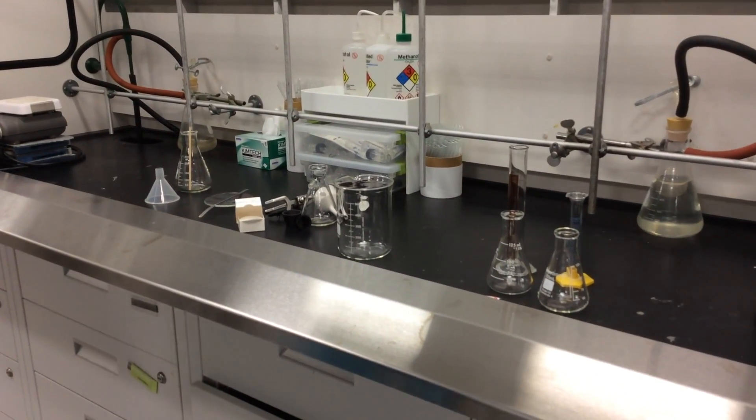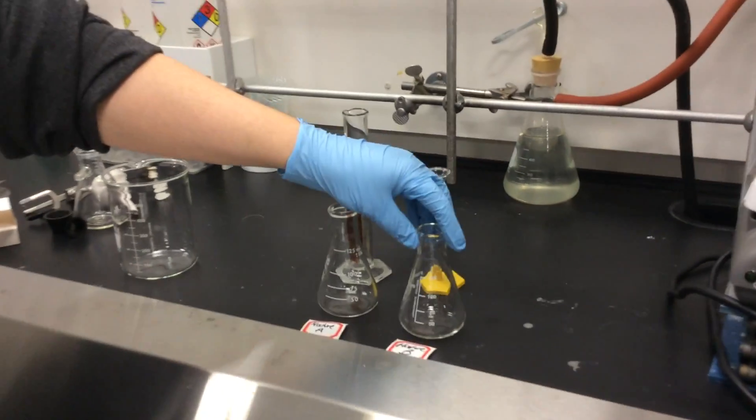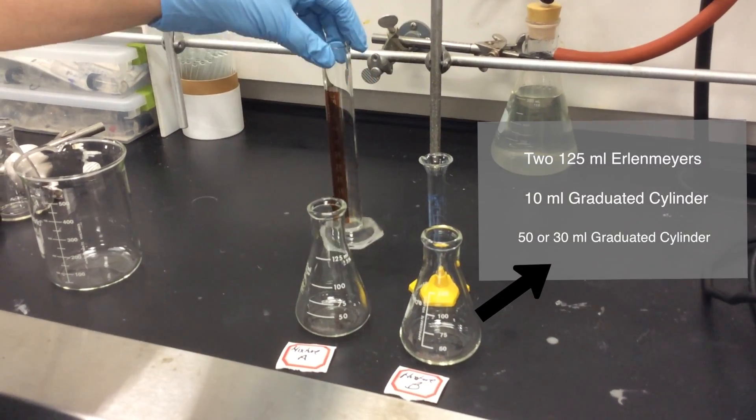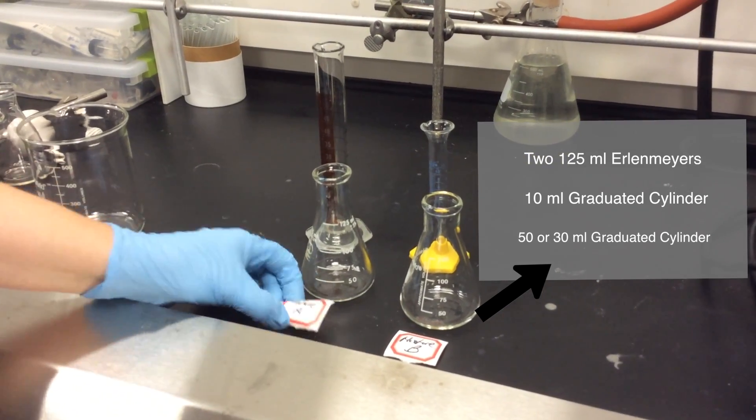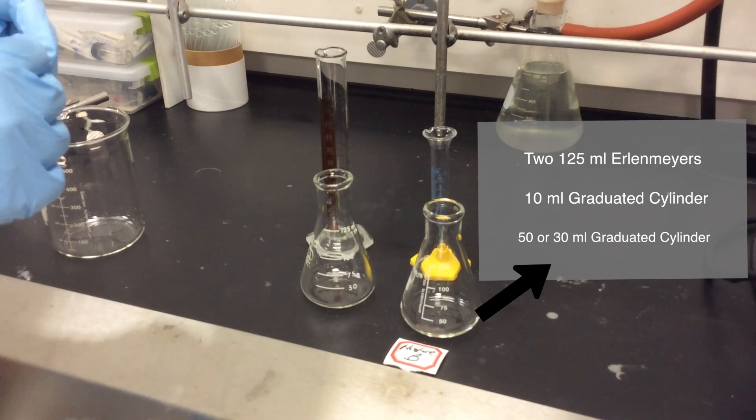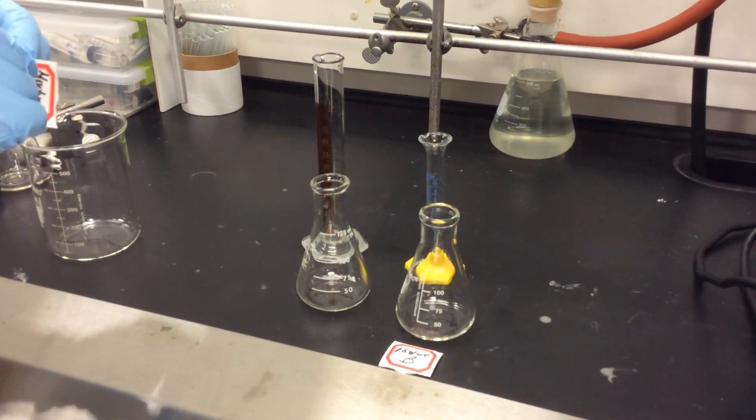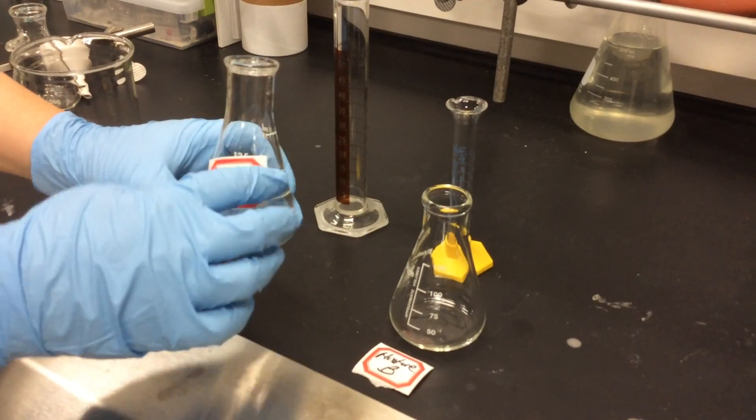All your glassware is located in your organic drawer under the hood. For this experiment, you'll first need two 125 milliliter Erlenmeyer flasks, a 10 and a 50 milliliter graduated cylinder. You will need to label the first Erlenmeyer mixture A, and the second Erlenmeyer mixture B.